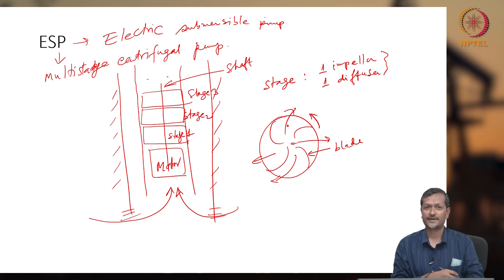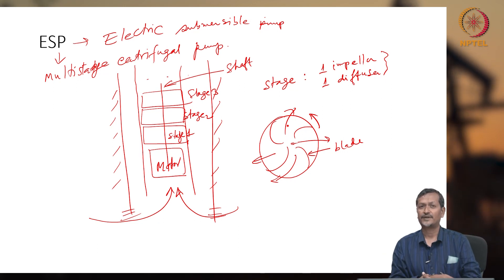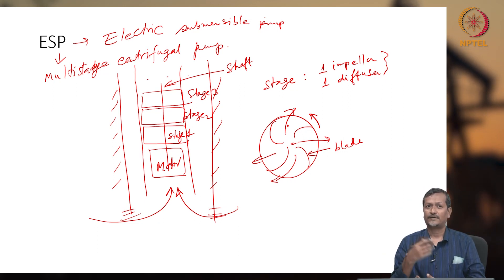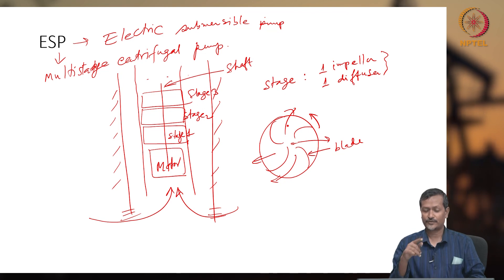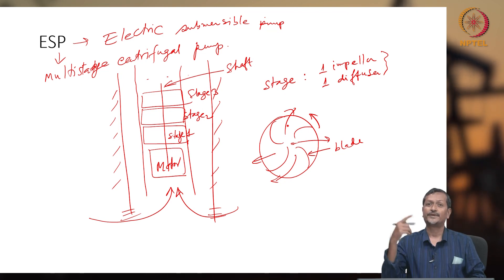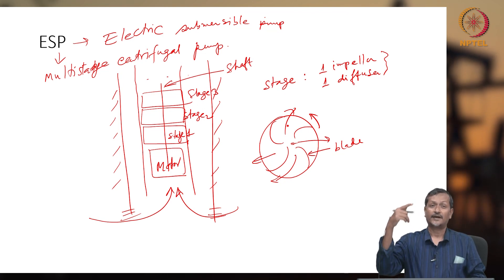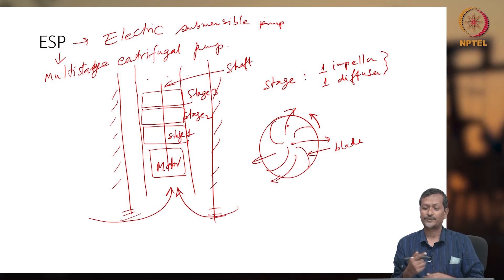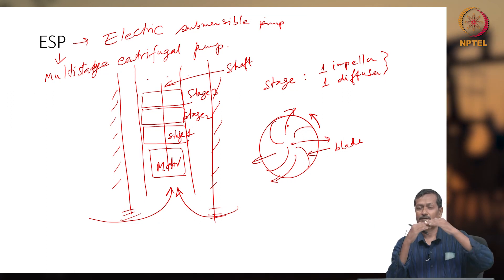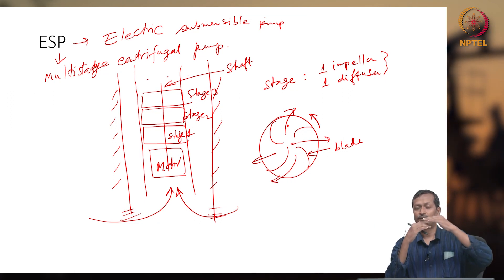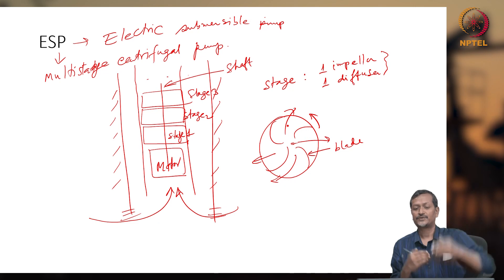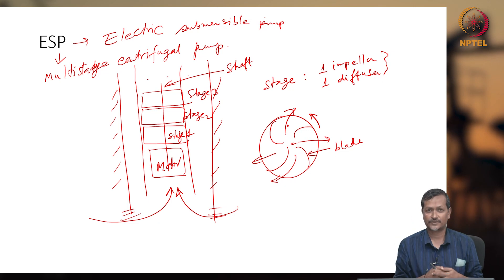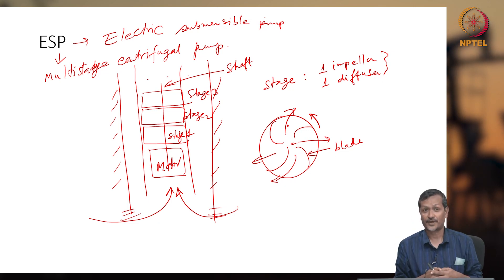If reservoir pressure is 100 bar and your ESP adds 100 bar more, you could effectively get 200 bar total pressure. So your liquid level increases and in that way you can increase your productivity.